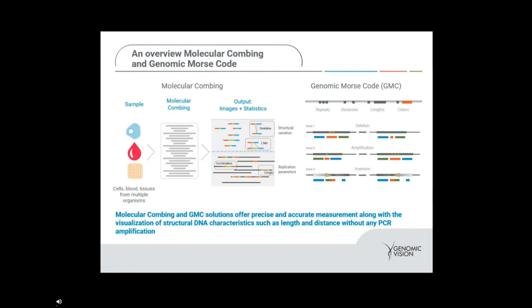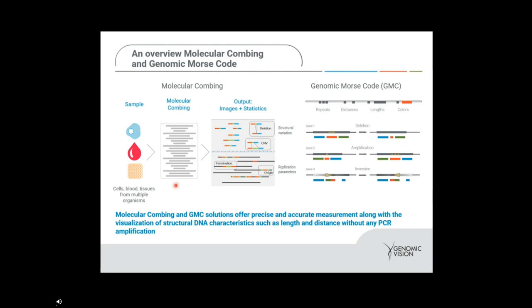Our molecular combing application is shown on the left-hand side of the slide. The key take-home is that any sample from cells, blood, or tissue can be used for molecular combing. Provided that you have anything from half a million cells onwards, you'll be able to use this application for replication analysis and telomere analysis. Furthermore, Genomic Vision provides the appropriate DNA extraction kit to extract high molecular weight DNA, enabling you to get ultra-long fibers to then comb and understand the structural features of that DNA.